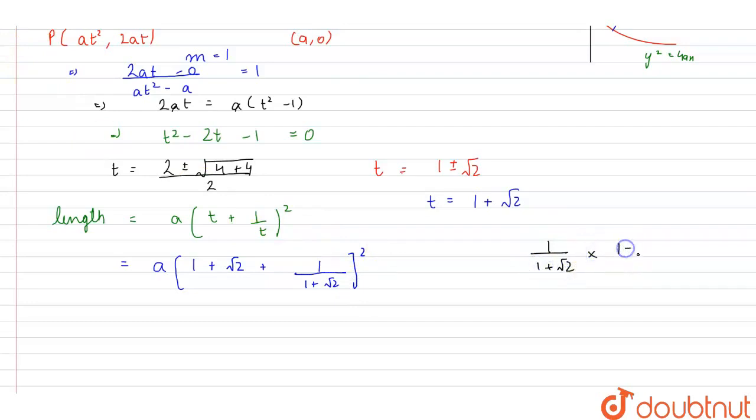we will multiply it by 1 minus root 2 upon 1 minus root 2. So, we get this as equal to 1 minus root 2 divided by minus 1. So, this is equal to root 2 minus 1.